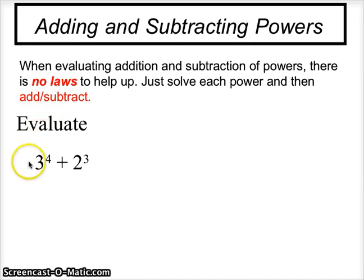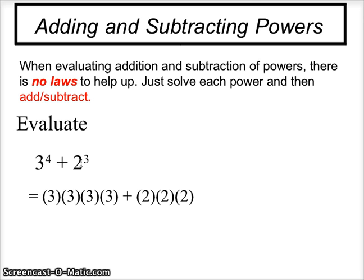To evaluate 3 to the power of 4 added to 2 to the power of 3, we are going to have to use expanded form for both of these powers. In this situation, 3 to the power of 4 is 3 times 3 times 3 times 3, and 2 to the power of 3 is 2 times 2 times 2.